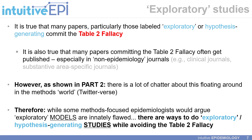It's important to acknowledge that many papers, particularly those labeled exploratory or hypothesis-generating, do indeed commit the Table 2 Fallacy. Many papers of this nature that commit the fallacy still get published, especially in non-epidemiology journals such as clinical or substantive area-specific journals. It's also been shown that you can get published in Nature while publicly committing the Table 2 Fallacy. However, while some methods-focused epidemiologists would argue that exploratory models are innately flawed, I believe there are ways to do exploratory or hypothesis-generating studies while avoiding the Table 2 Fallacy.